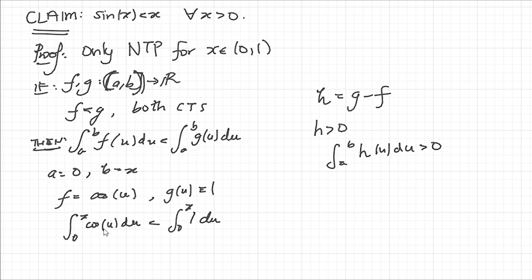This left hand side, well the integral of cosine is sine, so if we plug in the limits we get sin(x) minus sin(0), but sin(0) is 0, so we get sin(x) is less than x because the integral of 1 between 0 and x is just the length of the interval which is x.